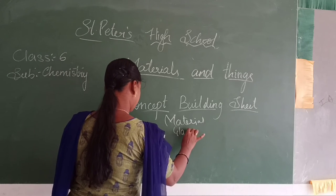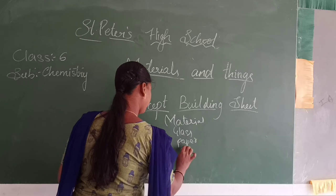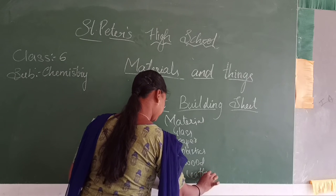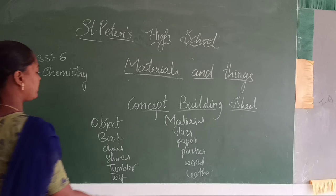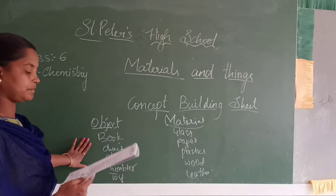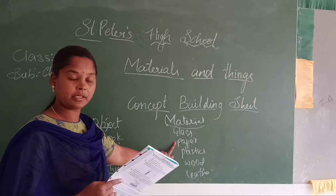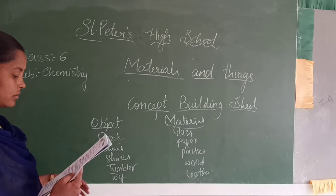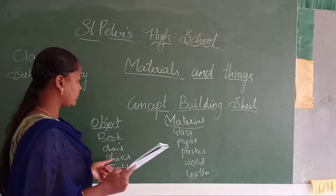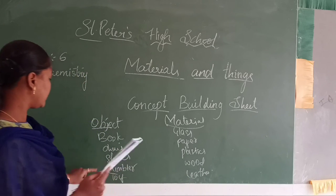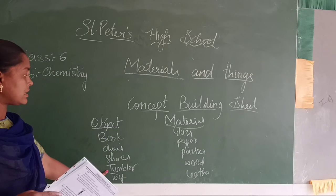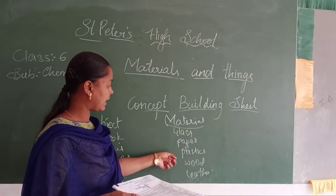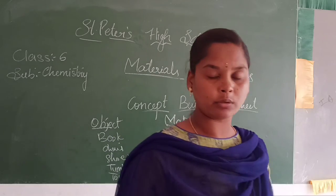The materials are glass, paper, plastics, and wood. Book is made up of paper. Chair is made up of wood, plastic, or even iron. Shoes are made up of leather. Tumblers may be of plastic or glass. And towels may be of cloth; we also have wooden items.